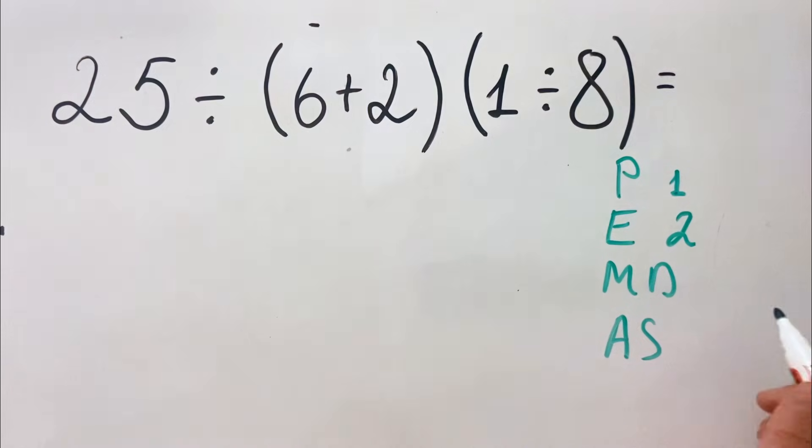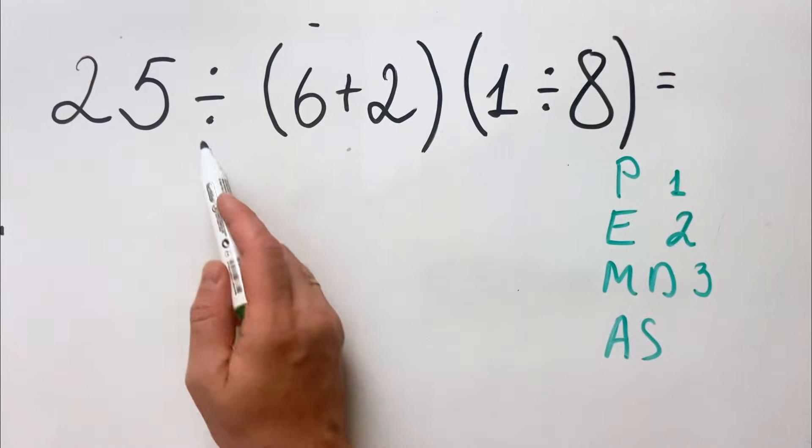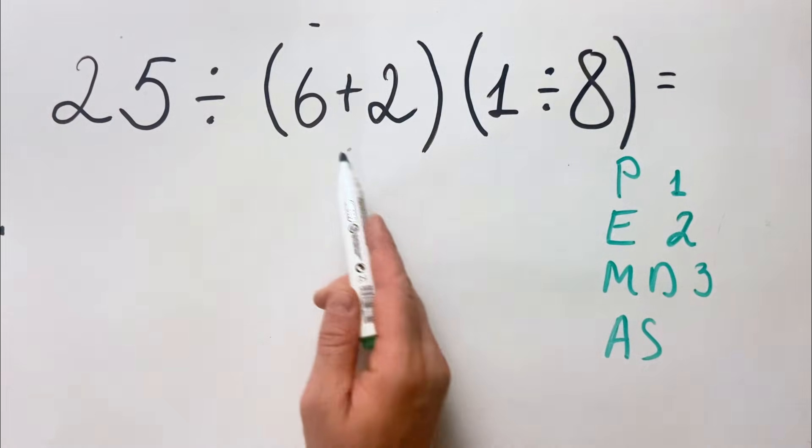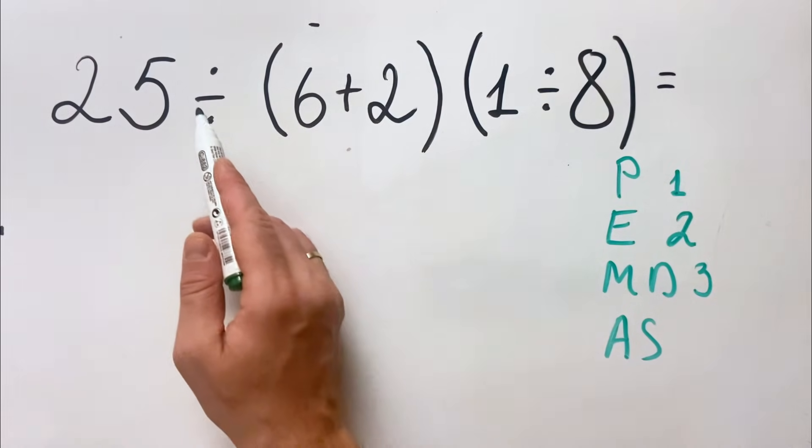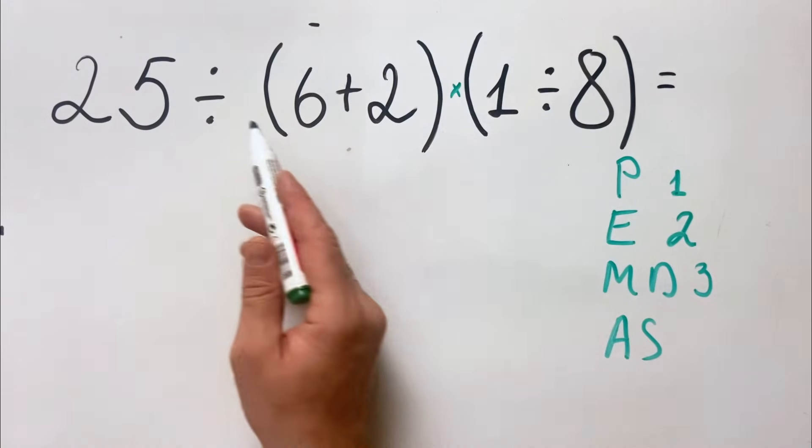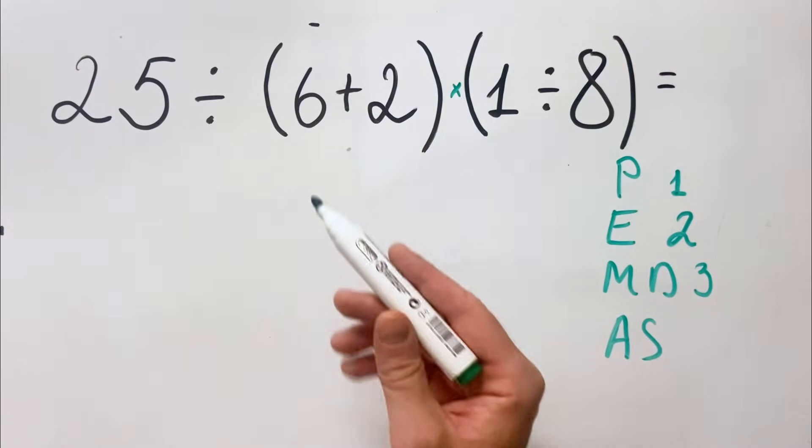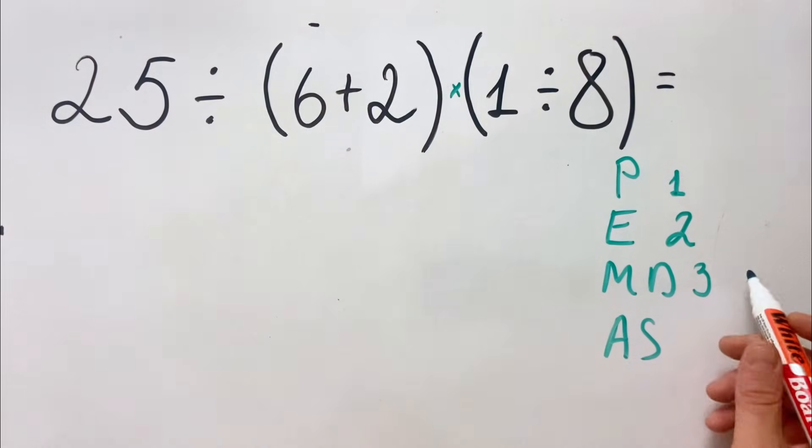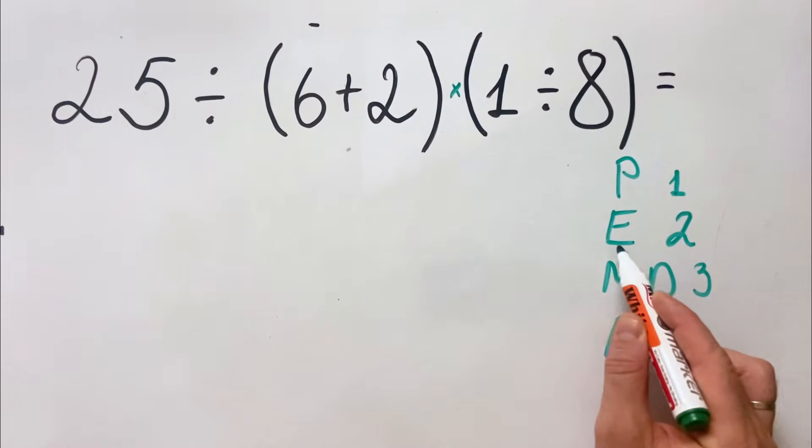Then we have multiplication and division, we must do it in the third place. In this case, after finalizing everything we did in parentheses, we'll do division, and also here we have a multiplication. So we'll do first this division and this division because multiplication and division have equal priority.